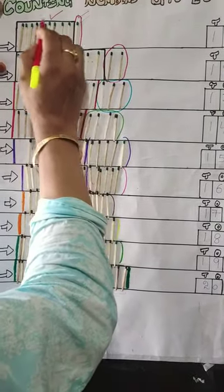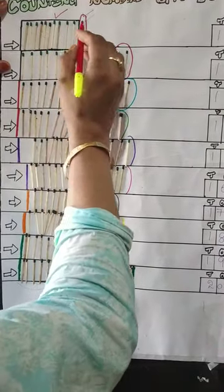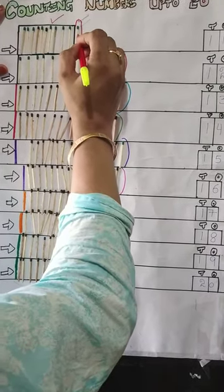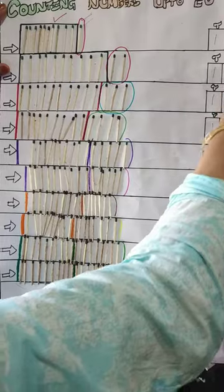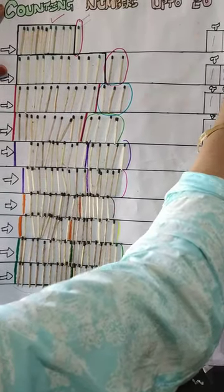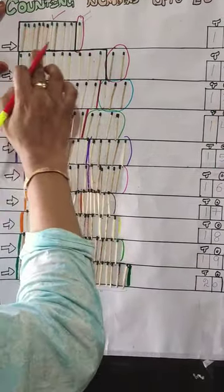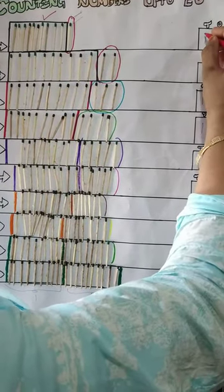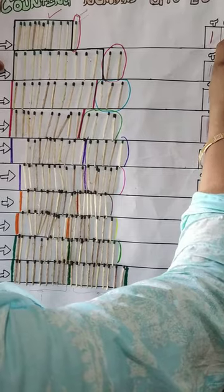They will form a group of 10 and one loose magic stick will represent 1s. That means 1 will come under the heading 1s and this 10, a group of 10 magic sticks, will represent 1 10. That means 1, 1, 11.